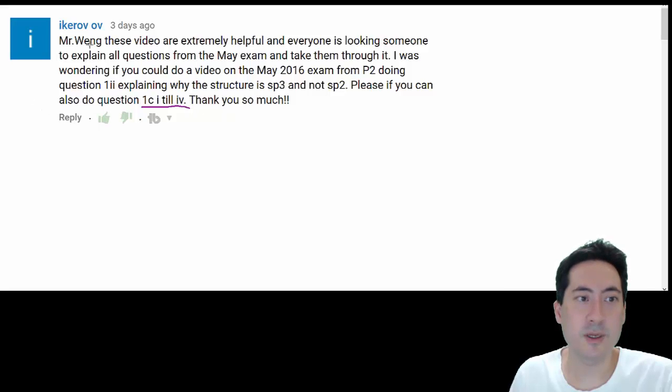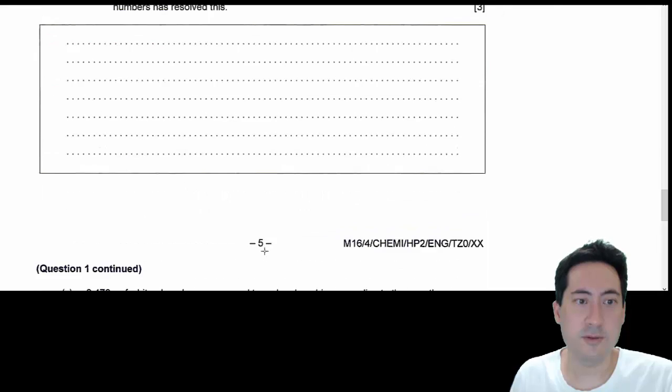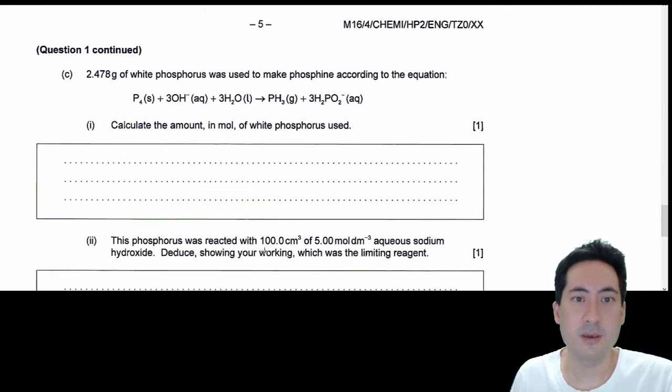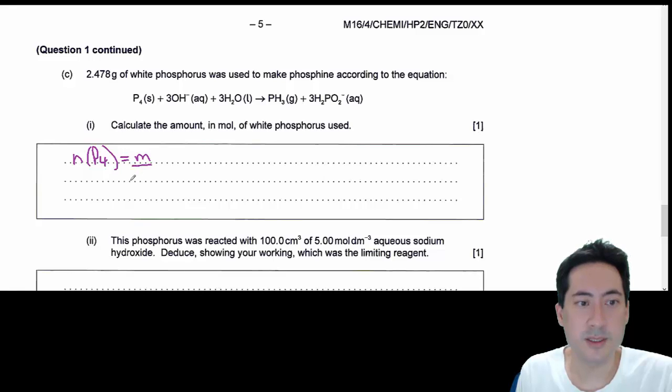Moving on to the next one from iKerov of stoichiometry. If I go over to that question, that's the same for standard level as well. So the question is 2.478 grams of phosphorus. Calculate the amount in moles of phosphorus used.